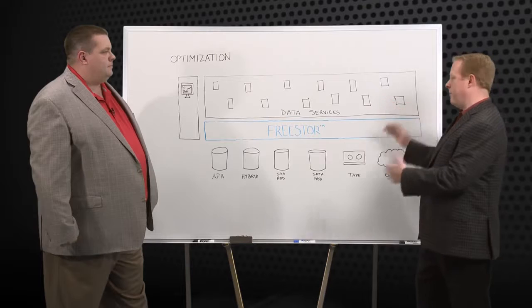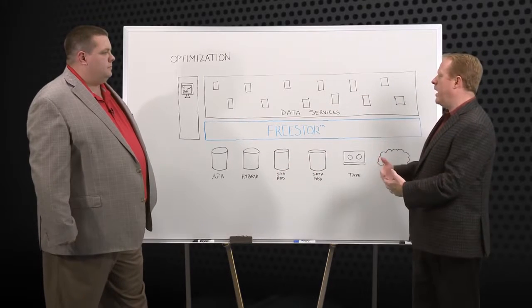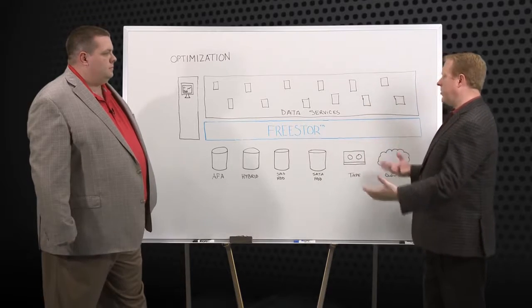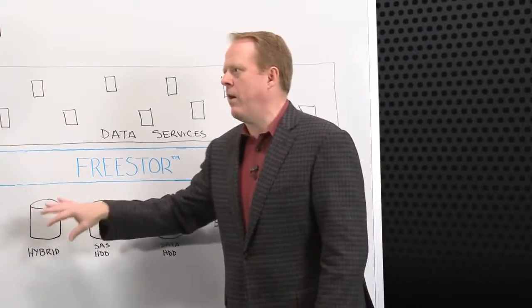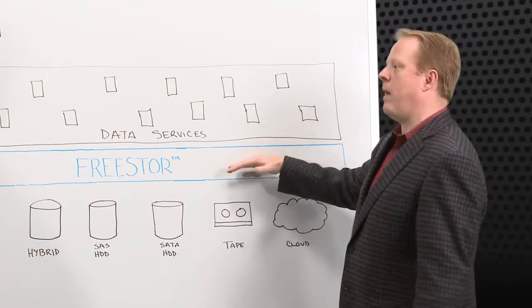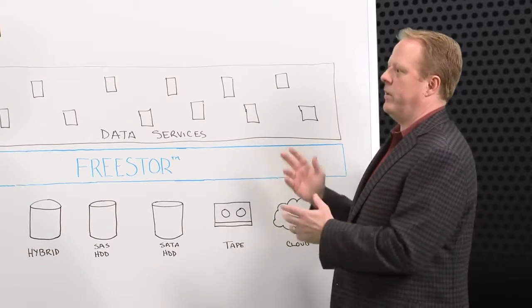We were talking about optimizing the underlying hardware and some of the capabilities that we have and being more efficient. But one of the things we talked about was also price. One of the key challenges that customers have today is they're paying for things separately a la carte. It gets very, very expensive. As we talked about, we're one platform with one view and one price. With FreeStore, everything's included.